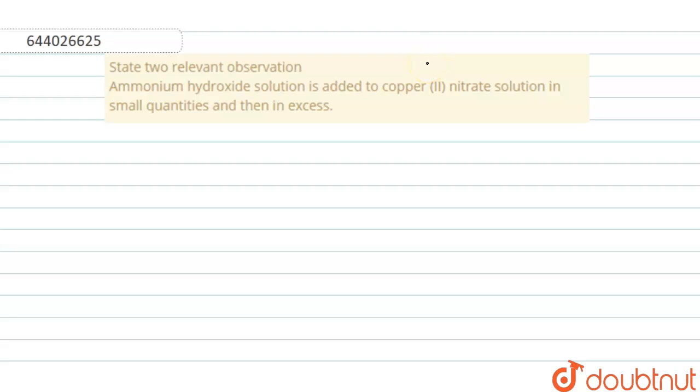where we have to state two relevant observations when ammonium hydroxide solution is added to copper(II) nitrate solution in small quantities and then in excess. Okay, so first let us do the one with small quantities.